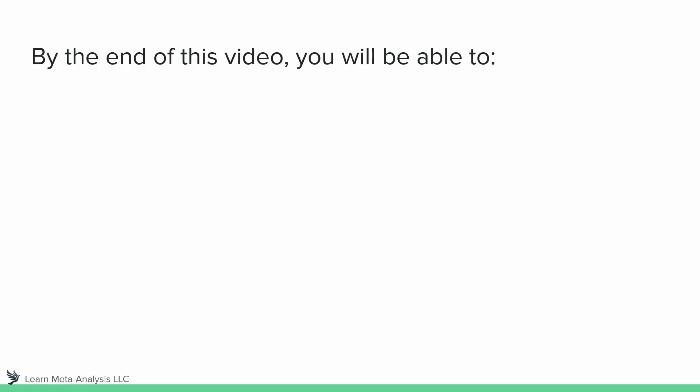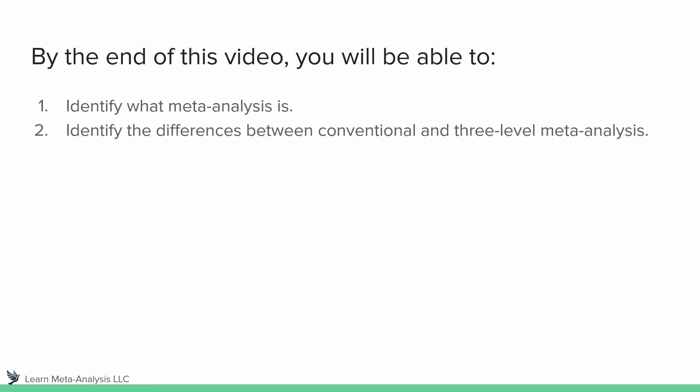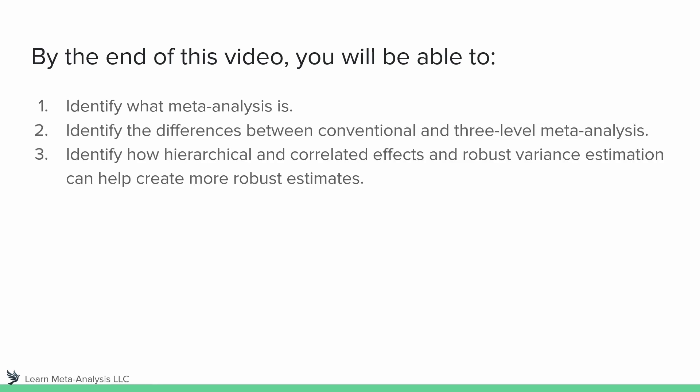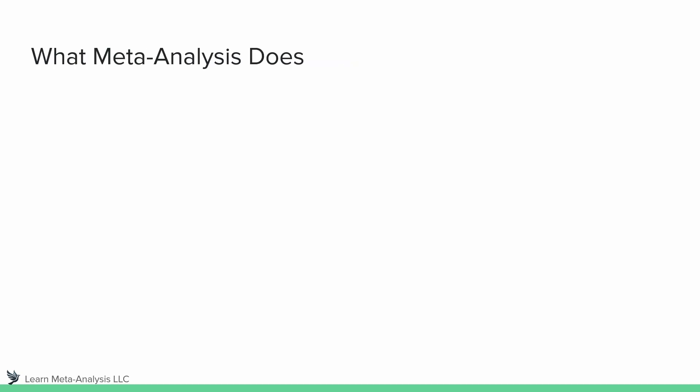By the end of this video, my hope is that you will be able to identify what meta-analysis is, identify the differences between conventional and three-level meta-analysis, and identify how we can use hierarchical and correlated effects and robust variance estimation to help create more robust estimates. Let's go ahead and get started.